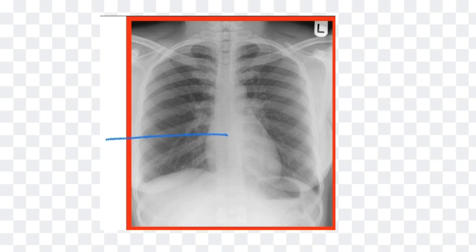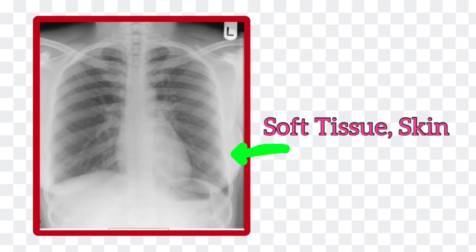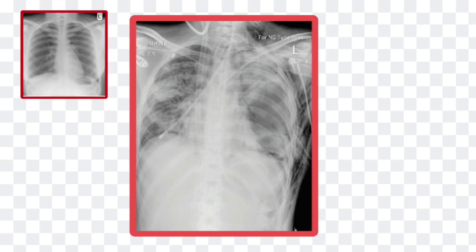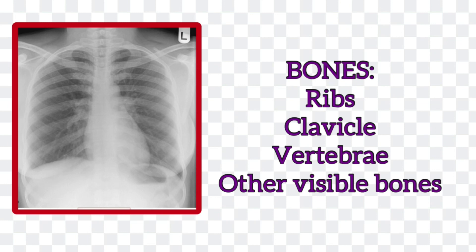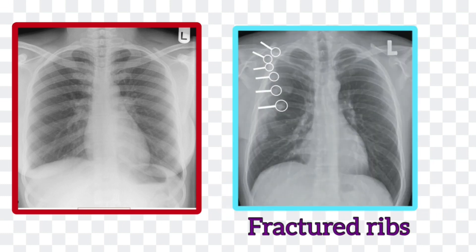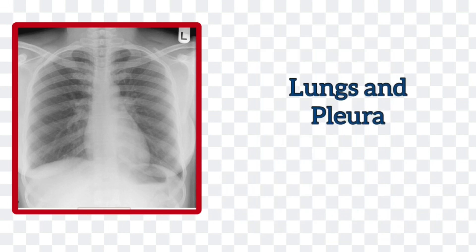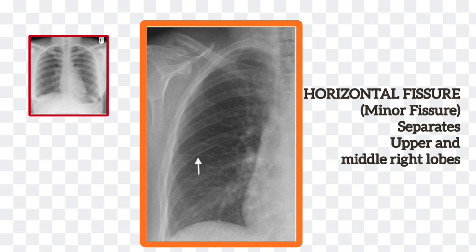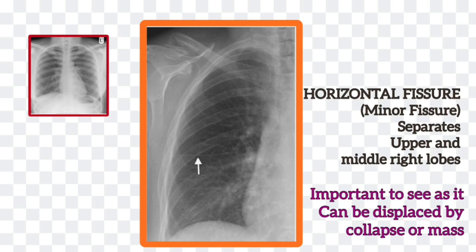Let us start reviewing this chest x-ray from outside to inside. First you come across soft tissues and skin — here you can see subcutaneous or surgical emphysema. Next, look at the bones: count the ribs on both sides, look at the scapula, clavicle, and humerus if visible. Since we are looking at bones, we can also check the vertebral bodies here. Next, look at the pleura and lungs. Both lungs should be of equal transradiancy. Try to identify the horizontal fissure on the right side — it runs from the hilum to the sixth rib in the axillary line. Look at the costophrenic angles, which should be well-defined acute angles.